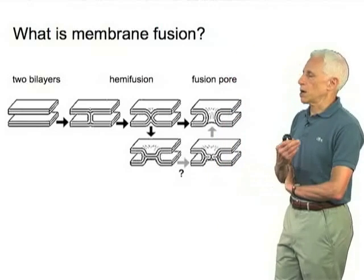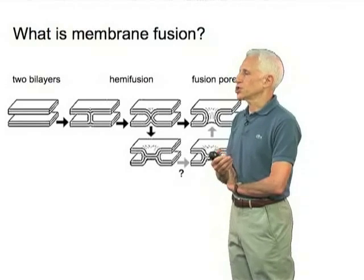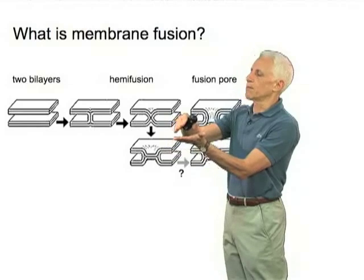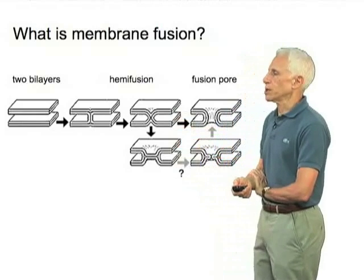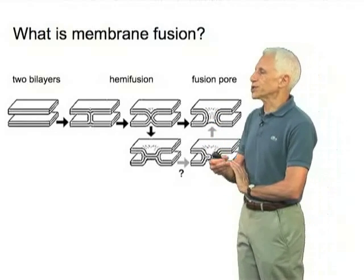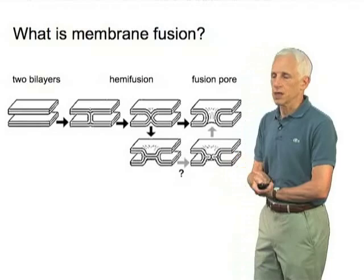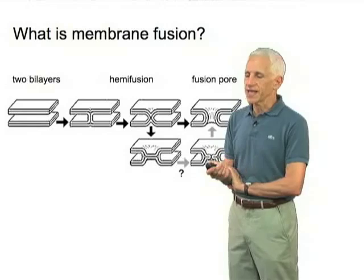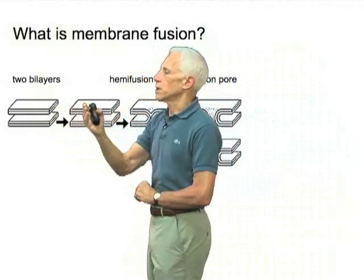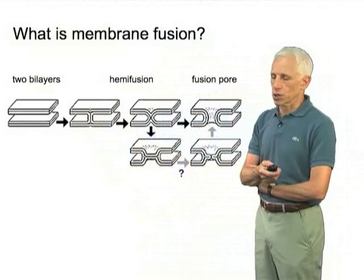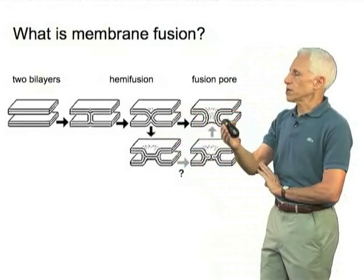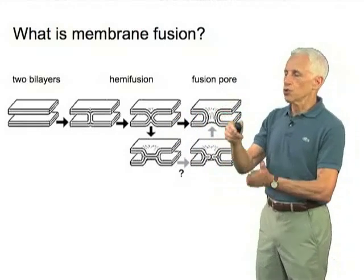An intermediate in the fusion process is generally accepted to be a structure in which the opposed monolayers — the opposed leaflets of the two bilayers — have merged, but not yet the distal ones. That's called a hemifusion structure or a hemifusion stalk. While there's still some debate about the detailed organization of the hemifusion intermediate, it's clear from a number of studies that it is an important step en route to fusion. The barrier between two bilayers and the hemifusion structure is one of the major kinetic barriers in this process, and there is probably also a kinetic barrier between hemifusion and the ultimate merging of the distal leaflets that leads to the formation of a fusion pore.